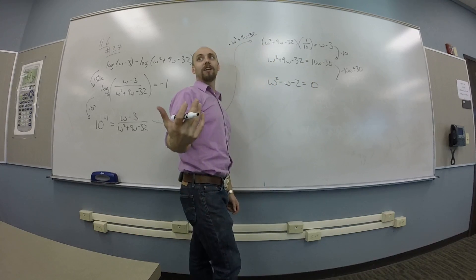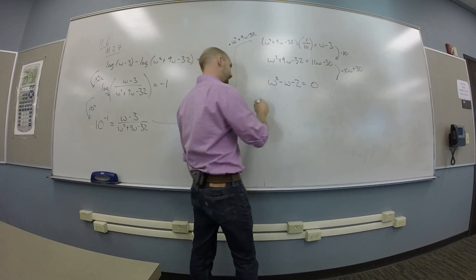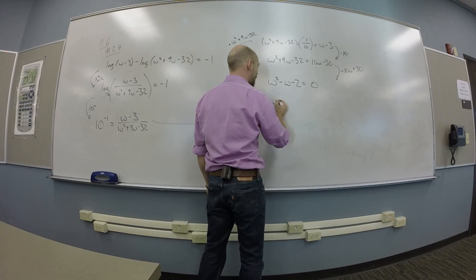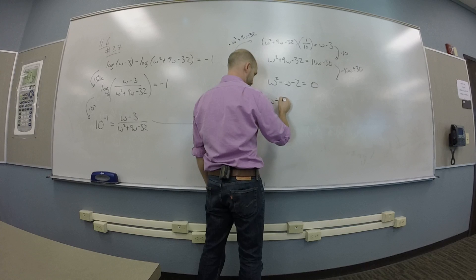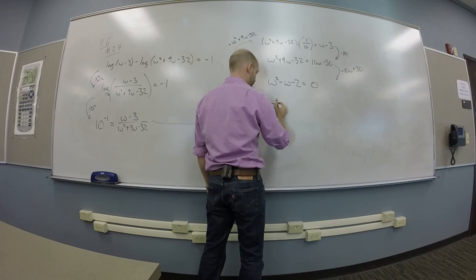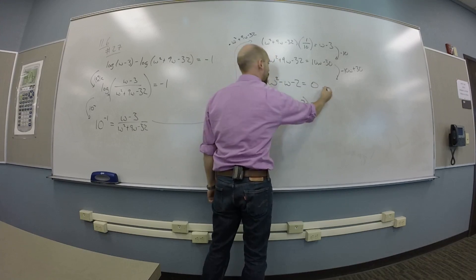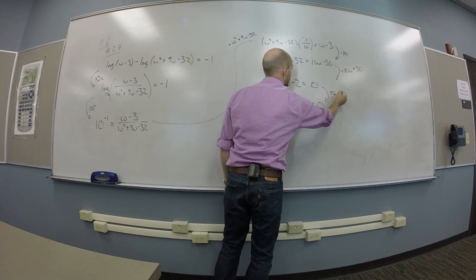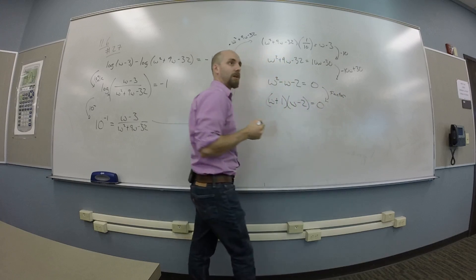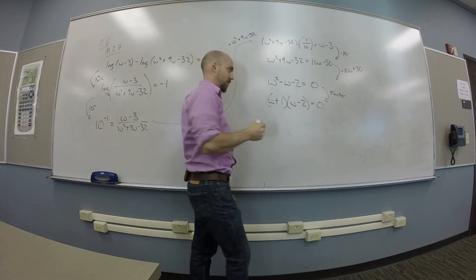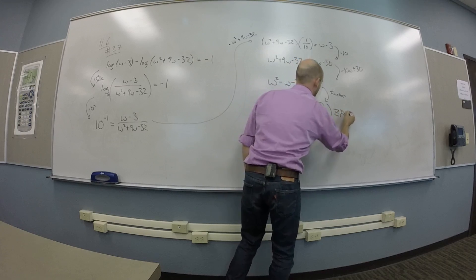And this can I factor? Yep. Thankfully, yes. And this gives me W minus 2 when W minus 1. Plus 1. Plus 1 times W minus 2 is 0. So that's a factor. That'll happen.